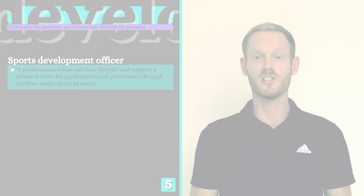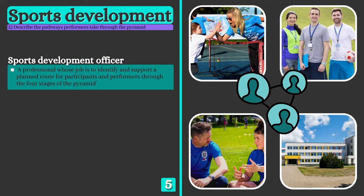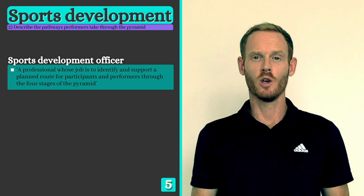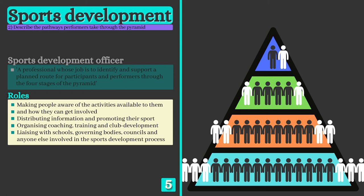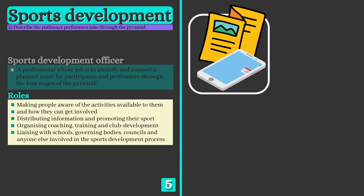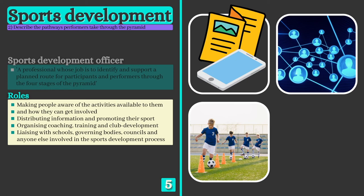Successful sports development depends on the effective partnership and networking between a wide range of people and groups. One of the key roles is that of the Sports Development Officer, whose job is to identify and oversee a planned route through the four stages of the pyramid. Sports Development Officers are tasked with increasing participation at all levels, which they achieve by ensuring that people are aware of the activities available to them and how they can get involved, distributing information and promoting their sport, organising coaching, training and club development, and liaising with schools, governing bodies, councils and anyone else involved in the sports development process.